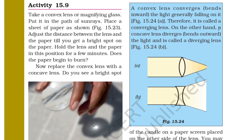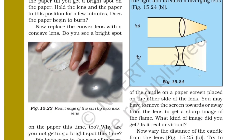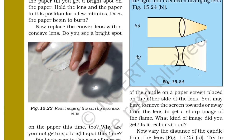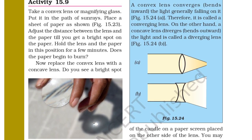On the other hand, a concave lens bends light outward, so it is called a diverging lens. It is now clear that the convex lens is a converging lens and the concave lens is a diverging lens.